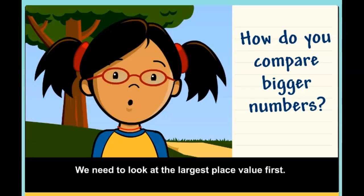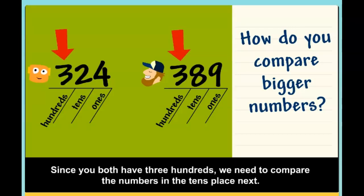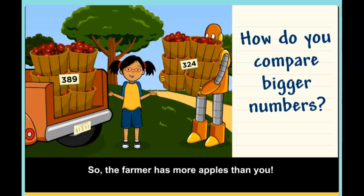We need to look at the largest place value first. Since you both have three hundreds, we need to compare the numbers in the tens place next. You have two tens, but the farmer has eight tens. So the farmer has more apples than you.